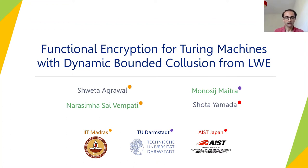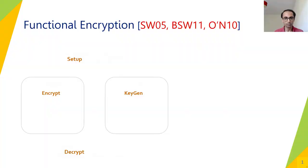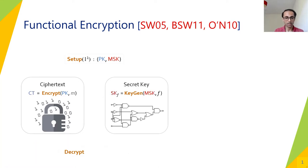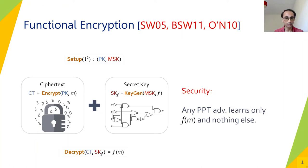Let's begin with the definition of functional encryption, which is a generalization of public key encryption and consists of four algorithms. Setup takes the security parameter and outputs a public key and a master secret key. Encryption takes the public key and a message M to output a ciphertext. Key generation takes the master secret key and the function F, possibly represented as a circuit, and gives a secret key for that function. Decryption takes a secret key and a ciphertext to reveal the function of the message.